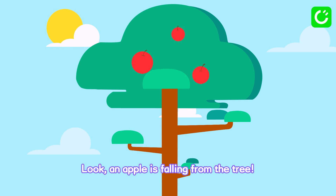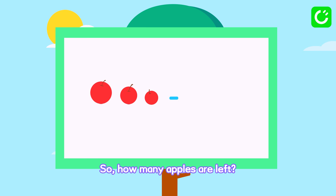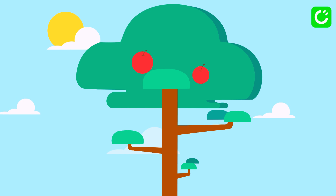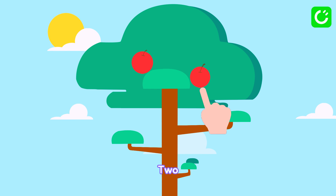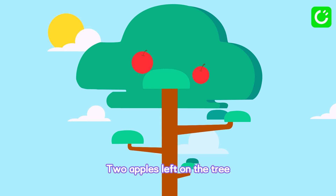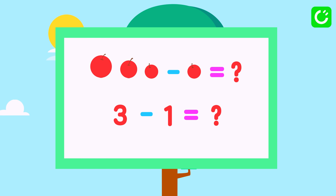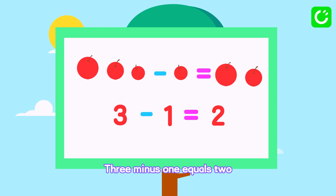Look, an apple is falling from the tree. How many apples are left? What is three minus one? One, two — two apples left on the tree. Three minus one equals two.